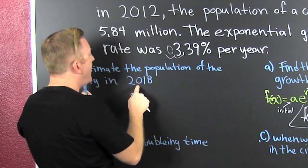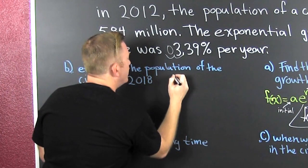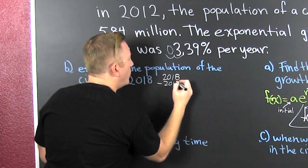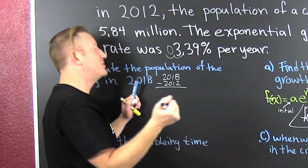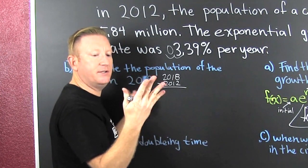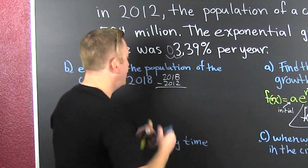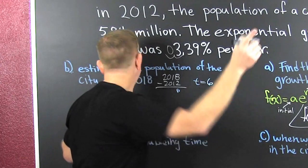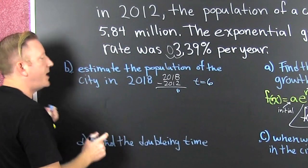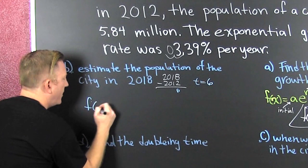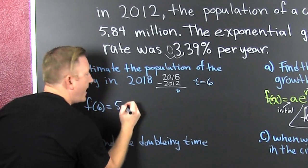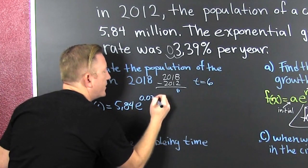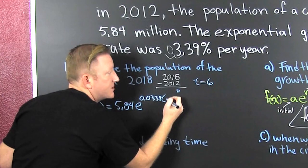We're starting at 2012 and we're trying to get to 2018. You can do 2018 minus 2012, or you can count them down: 12, 13, 14, 15, 16, 17, 18 — that's 6 years. So our t is going to be 6. Then we plug it in. This is going to be f(6) — that's 5.84·e to the 0.0339 times 6.